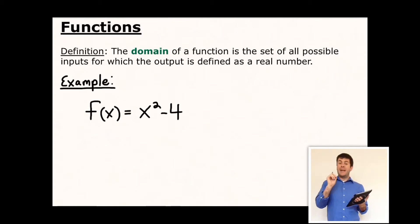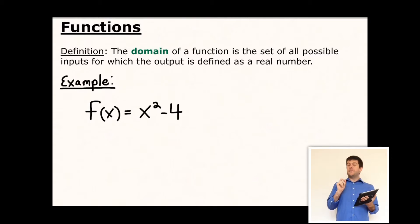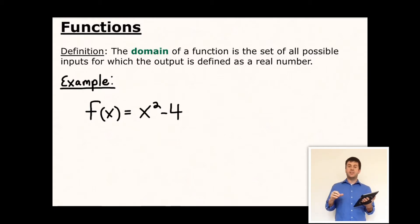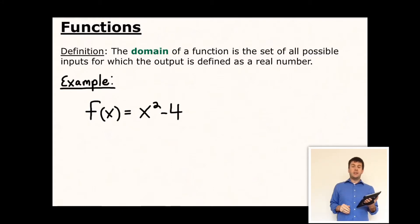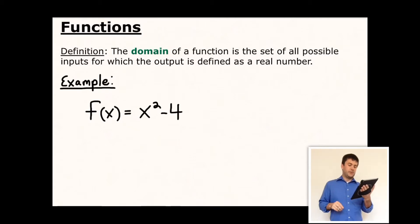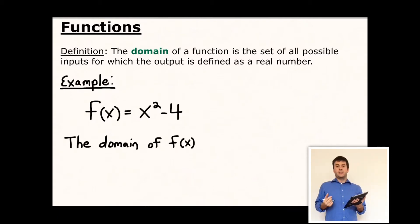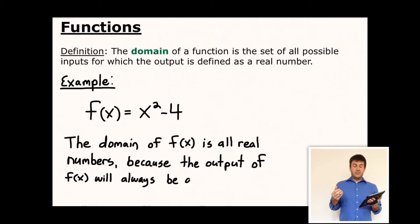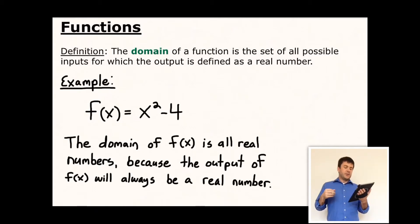Now let's talk about the domain of a function. The domain is the set of all possible inputs for which the output is defined as a real number. If you take a value from the domain and chuck it into the function machine, it will spit out a real number. For example, f(x) = x² − 4 has a domain of all real numbers — you can stick whatever number you want in for x and get a real result every time.